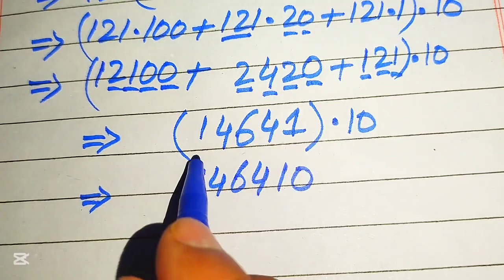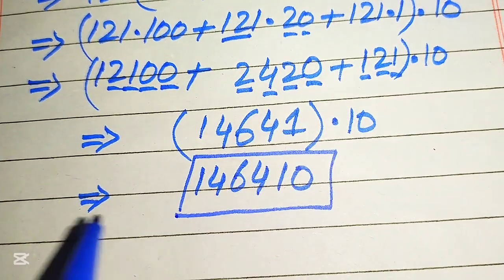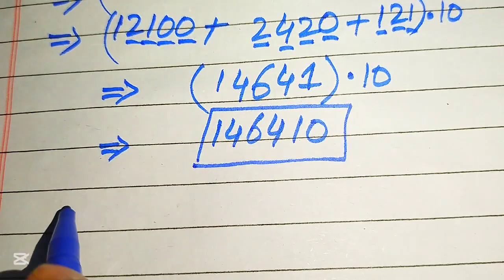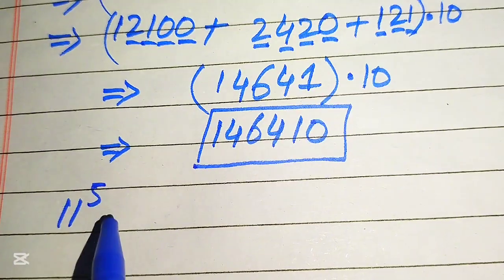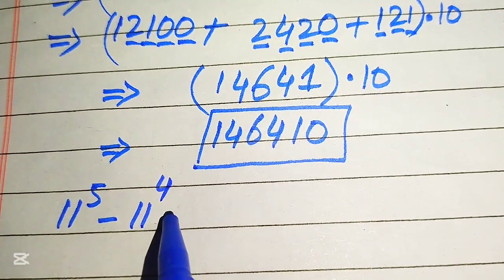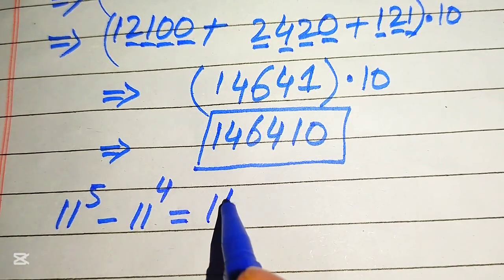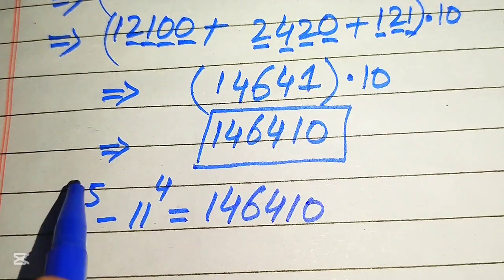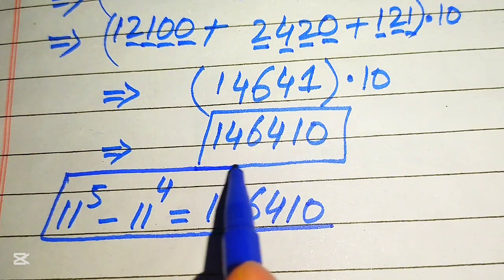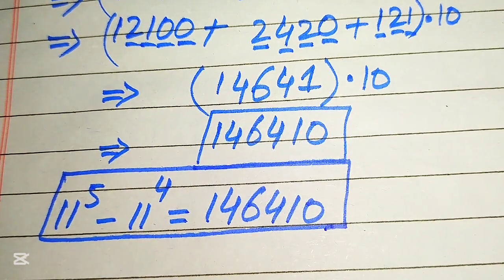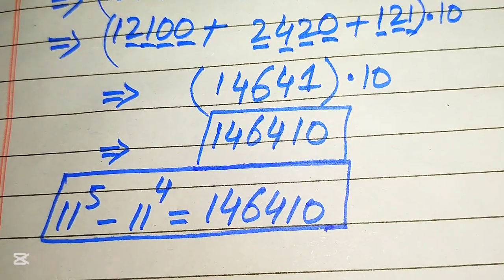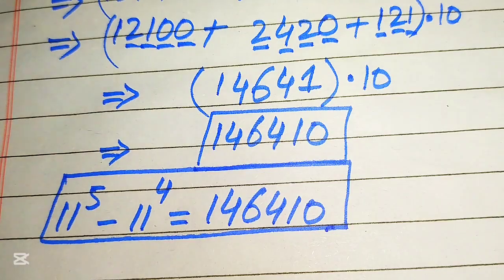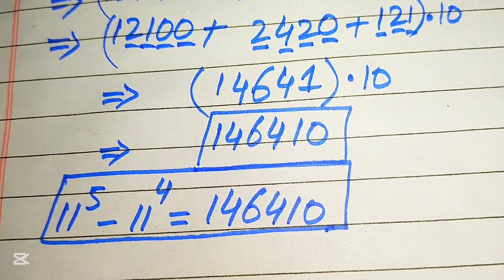Now we multiply this complete number by 10. To multiply by 10 we simply place a zero at the end, giving us 146410. This is our final simplified form: 11 to the power of 5 minus 11 to the power of 4 equals 146410. I hope you liked this video — please don't hesitate to write your method in the comment section. Thank you so much for watching, and please subscribe to my channel for more exciting videos.